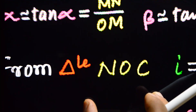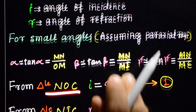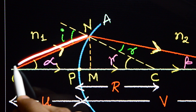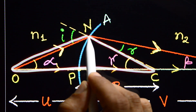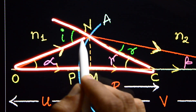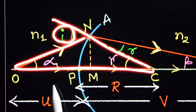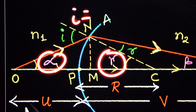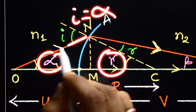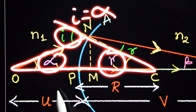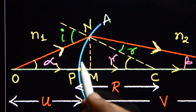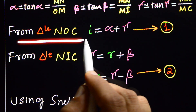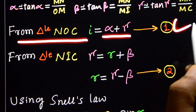From triangle NOC, i is the exterior angle. Therefore, i = alpha + gamma. That is our first equation.